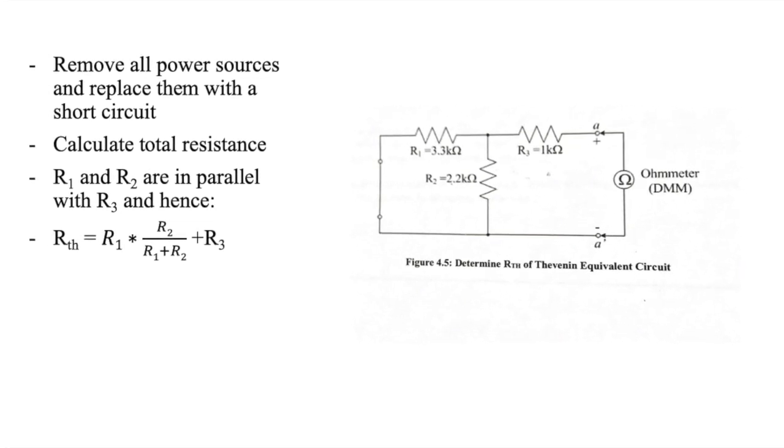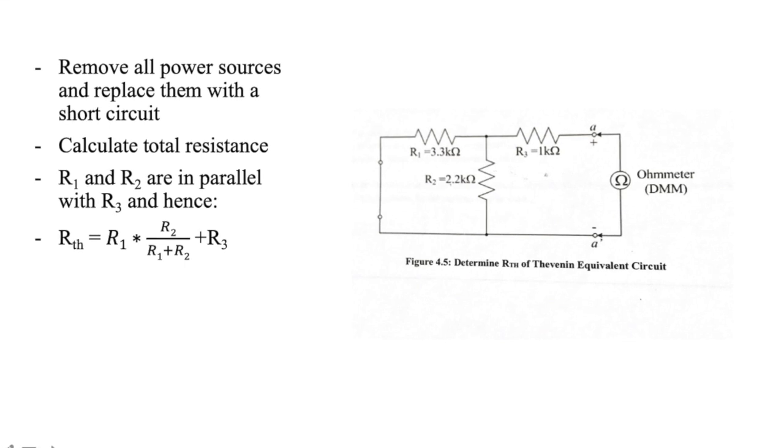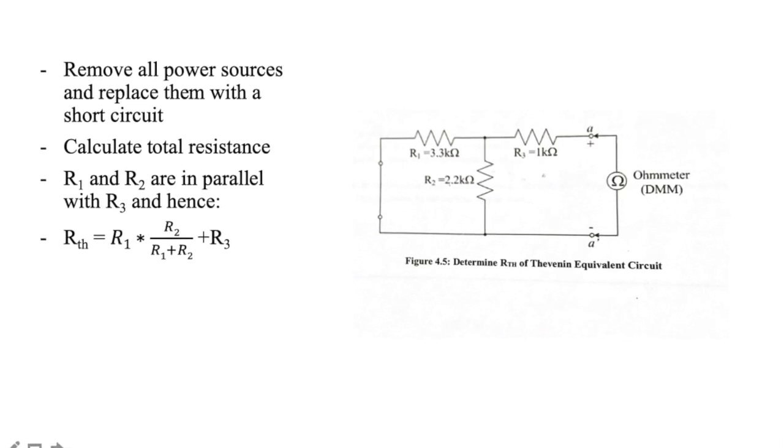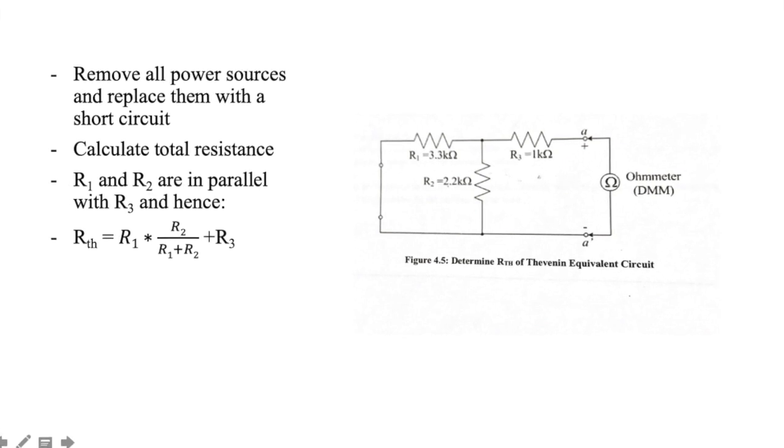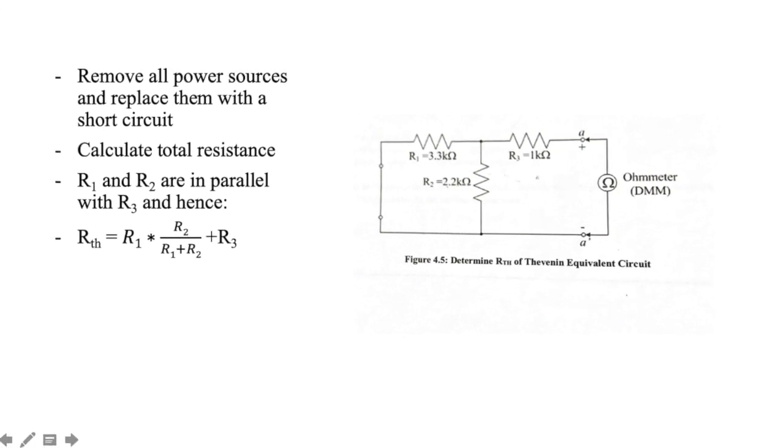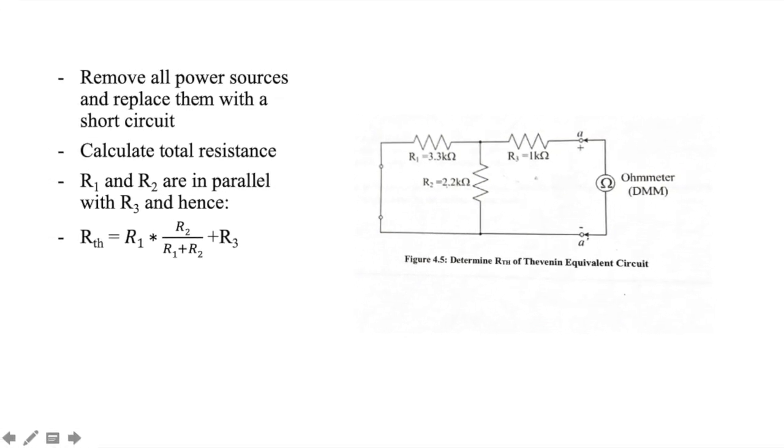From the diagram, we can see that R1 and R2 are in parallel with each other and in series with R3. And thus, the total resistance is equal to R1 multiplied by R2 all over R1 plus R2 plus R3.